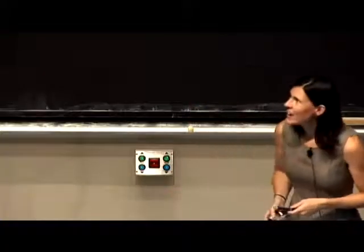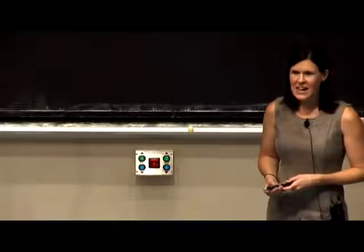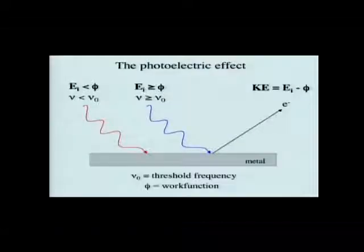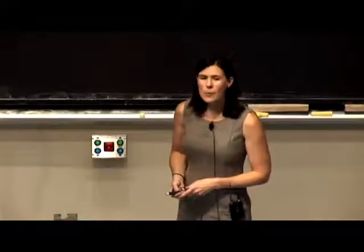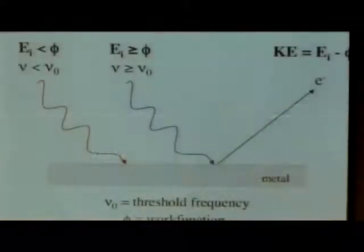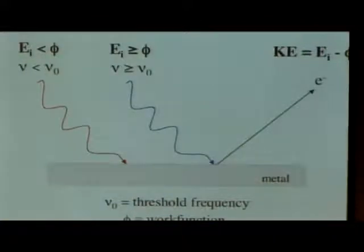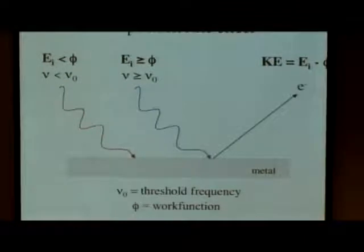What Einstein then clarified for us was that we could also be talking about energies. He described the relationship between frequency and energy — that they're proportional. If you want to know the energy, you just multiply the frequency by Planck's constant. So now we can talk about it in different terms: the incident energy, E sub i, or the energy of the light that comes in, or the work function, which is just another way to say threshold energy — the minimum amount of energy required to eject an electron.